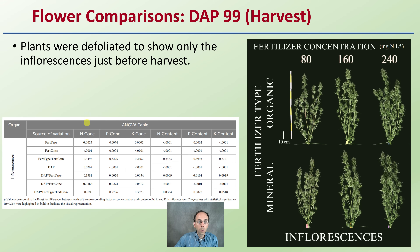When looking at the source of variation, we're examining the concentration of nitrogen, phosphorus, and potassium — looking at those different contents and breaking them down both from a table standpoint and a visual standpoint.